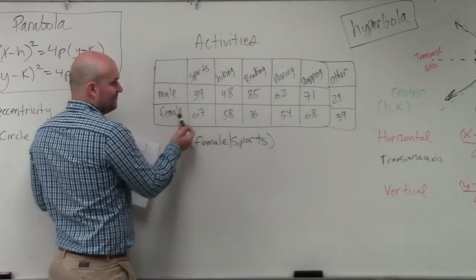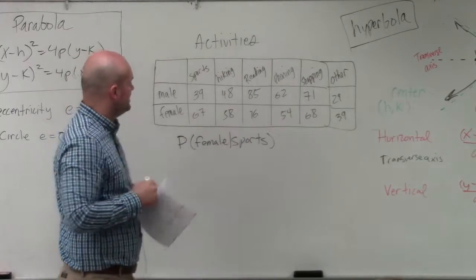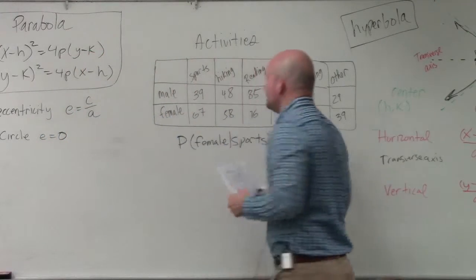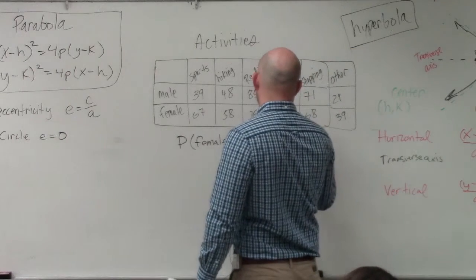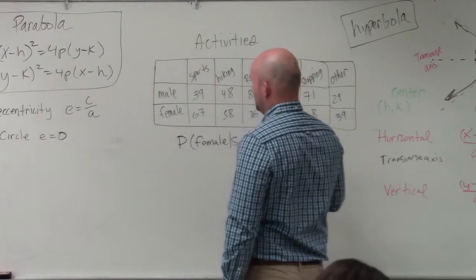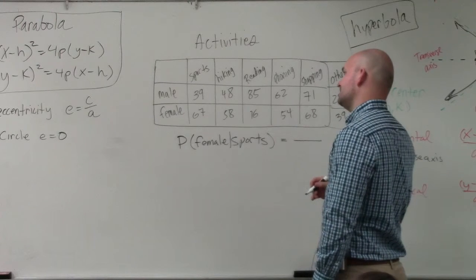What we're looking for is males and females that play sports. That's going to be our total number. So we need to add 39 plus 67. That gives us 106.